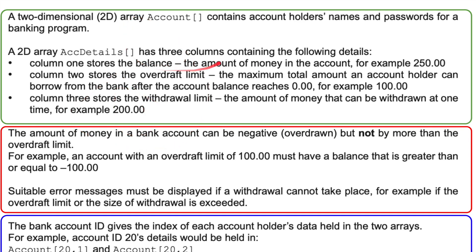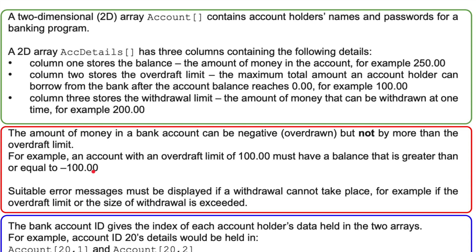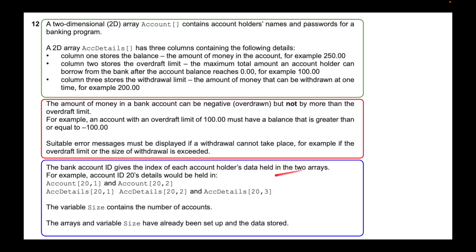So we've got two arrays linking to each other. The money in account details must be linked somehow to the account holder. The amount of money in a bank account can be negative — it can be overdrawn — but not by more than the overdraft limit. For example, an account with an overdraft limit of 100 must have a balance greater than or equal to minus 100. Suitable error messages must be displayed if the withdrawal cannot take place. The bank account ID gives the index of each account holder's data held in the two arrays.